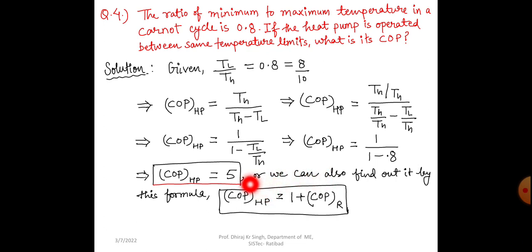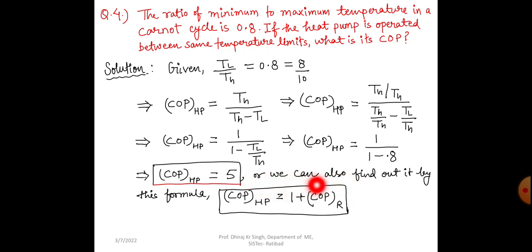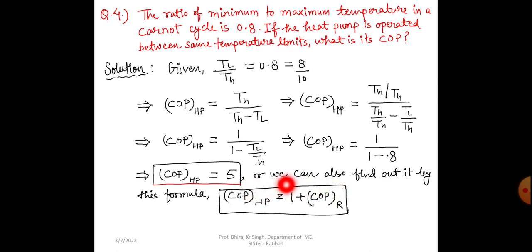Alternatively, we can use the formula: COP of heat pump equals 1 plus COP of refrigerator. To use this formula, we would first need to find out the COP of the refrigerator, and from that we can find out the COP of the heat pump.